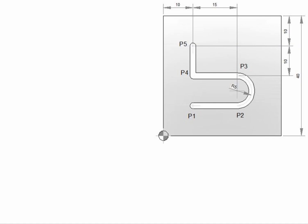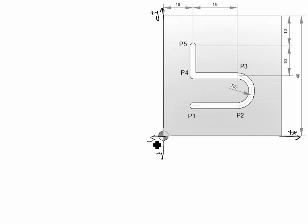Hi friends, welcome to my channel Excellent Ideas in Education. Today we are going to learn about basic milling program for incremental and absolute command. In this drawing, the starting point is given at P1, then P2, P3, P4, and P5. We will write the X and Y directions: plus X, plus Y, minus Y, and minus X.